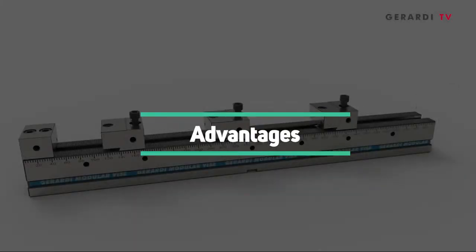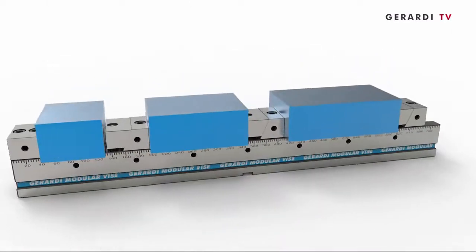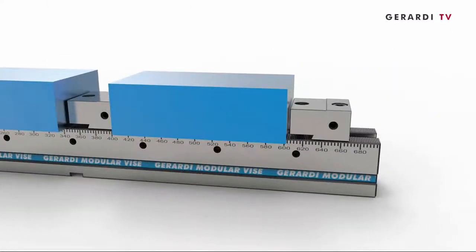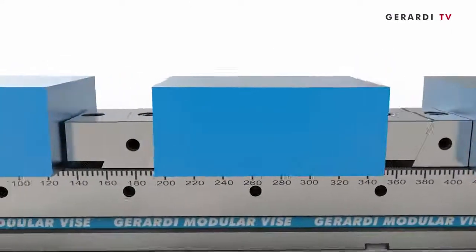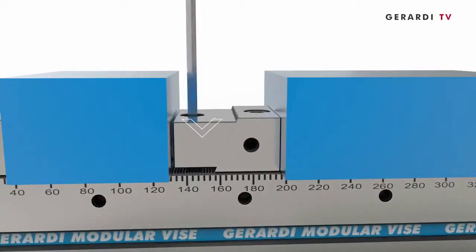The Multiflex vise series is a totally new concept of modular clamping system, able to maximize the machine table capacity and increase its productivity, reducing setup times to the minimum.